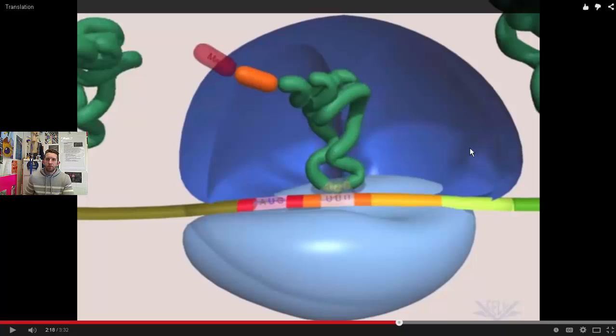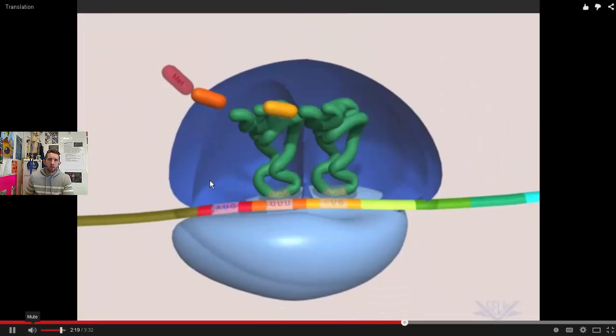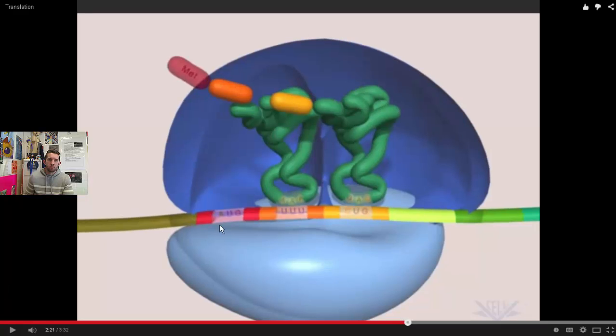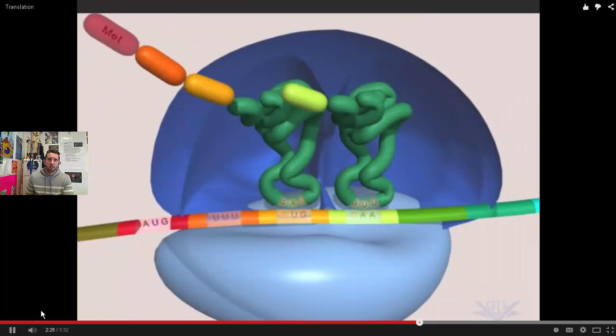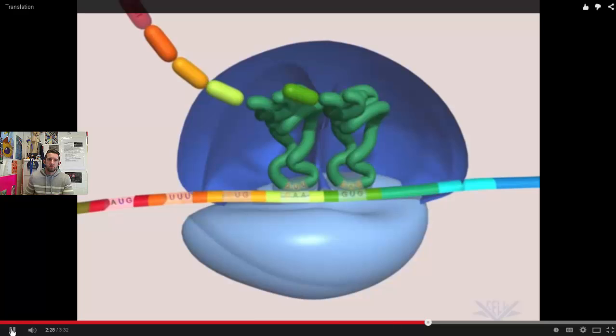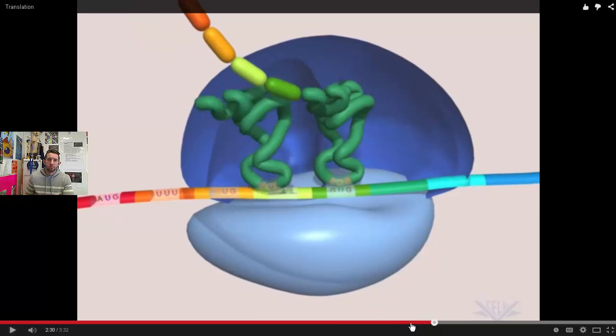The ribosome is shifting down, which kicks this particular tRNA out. This tRNA shifts down to this site, which empties this one. And we watch it over again. As things shift, the tRNA in this site gets kicked out. This one shifts down, which opens up this one. And we just watch it go. And we watch our amino acid chain elongate.